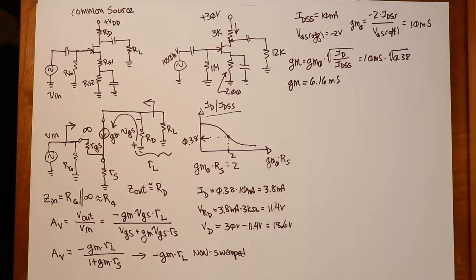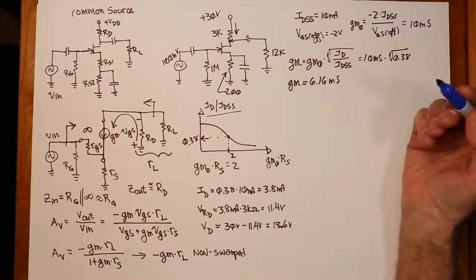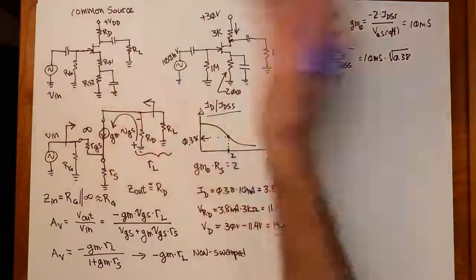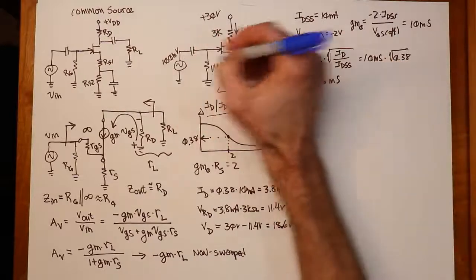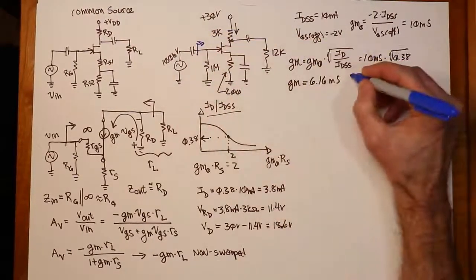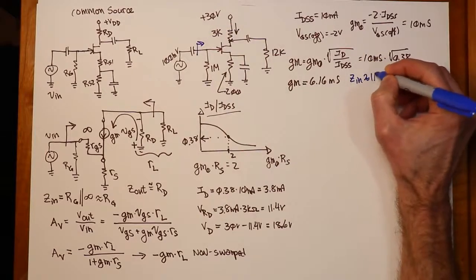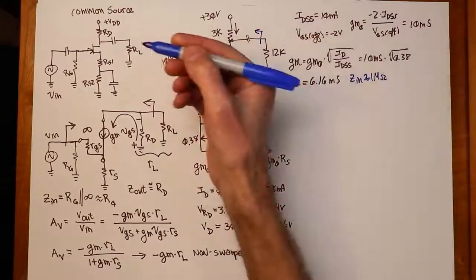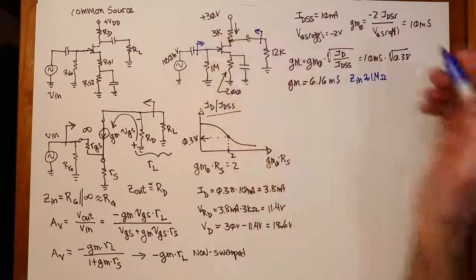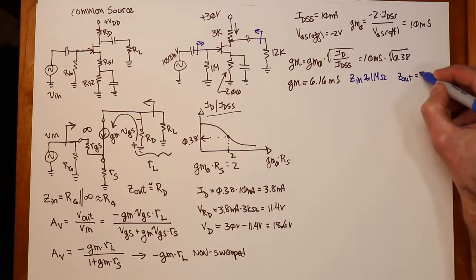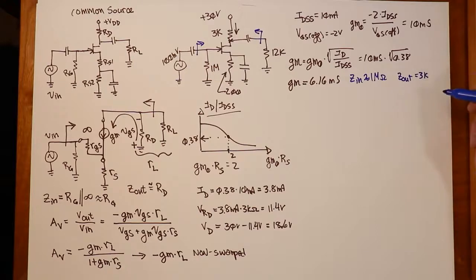Now we shift gears here a little bit. Let's get the input and output impedances out of the way. Like I said, we can do that pretty much by inspection. What are we looking at? Well, the ZIN, we're sitting out here. We're looking in this way. We see the 1 meg. From the output, looking back this way for the output impedance, we just see the 3K.